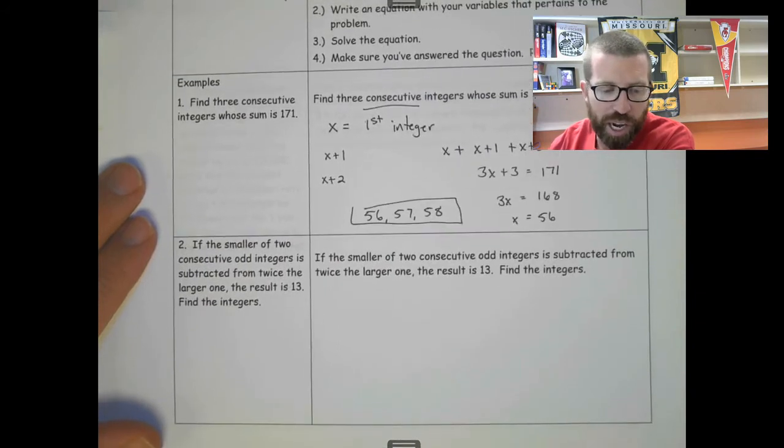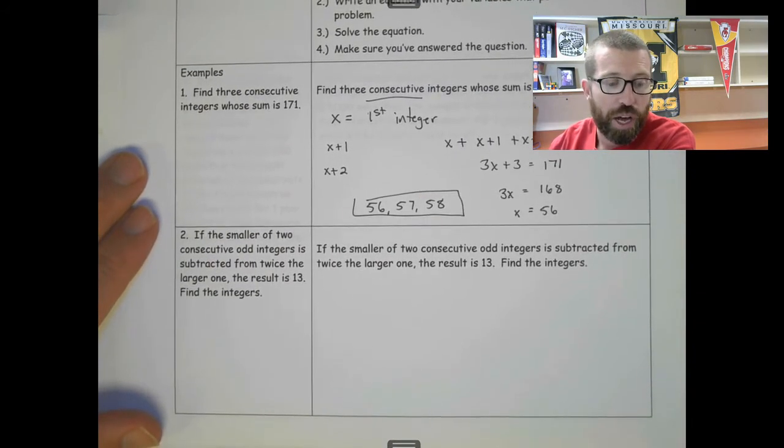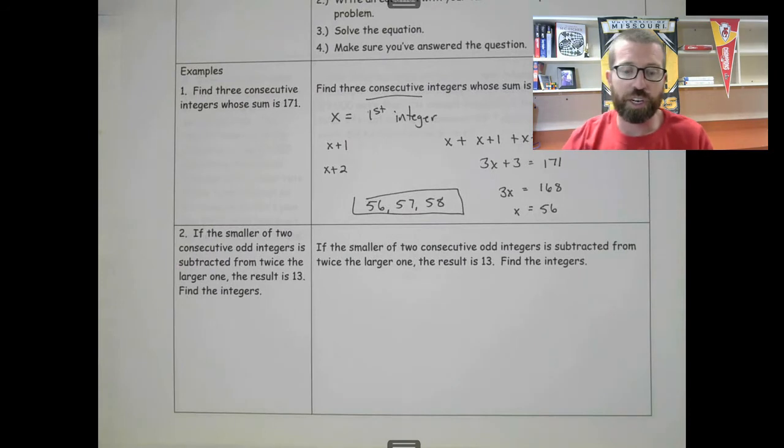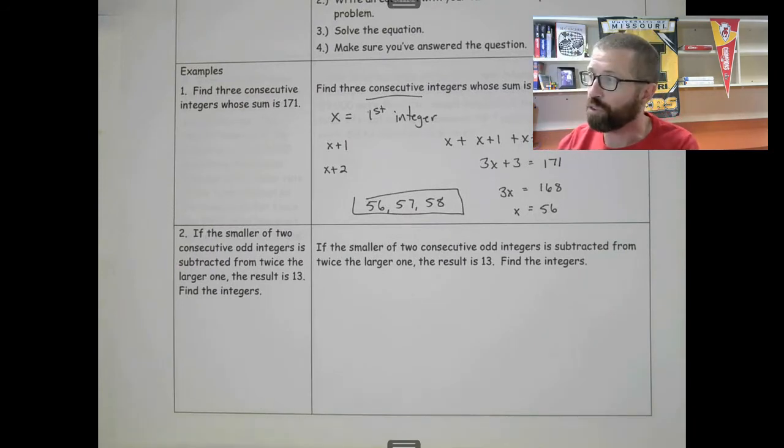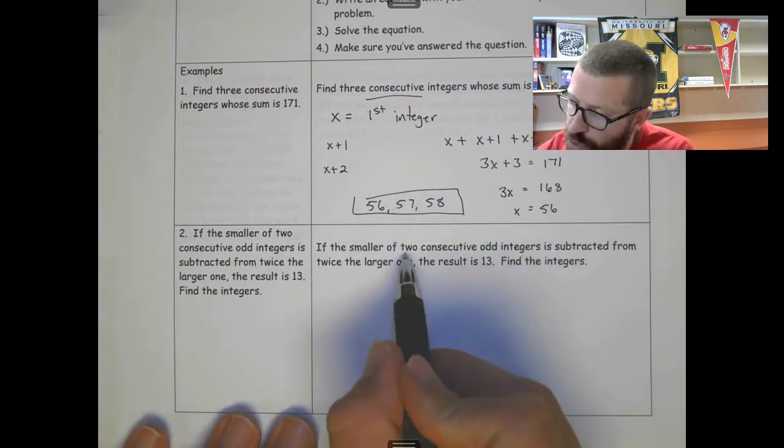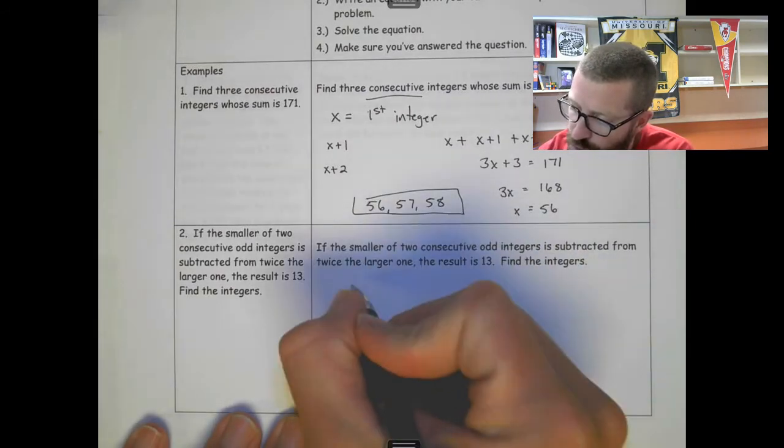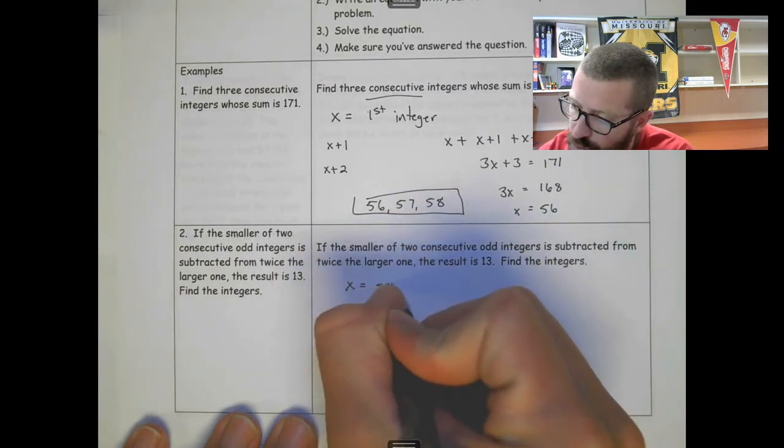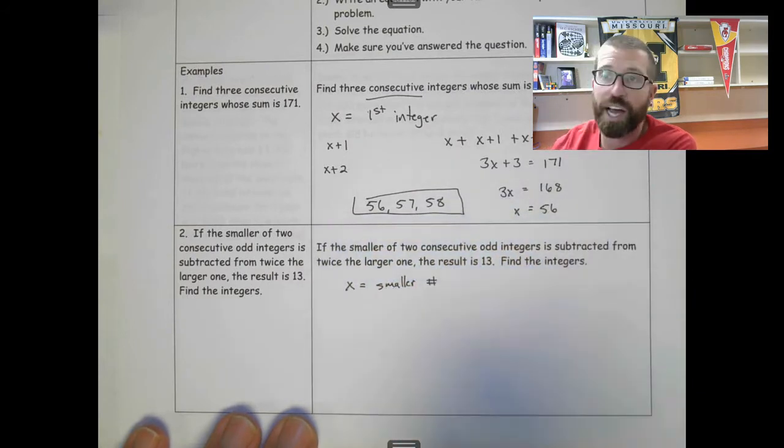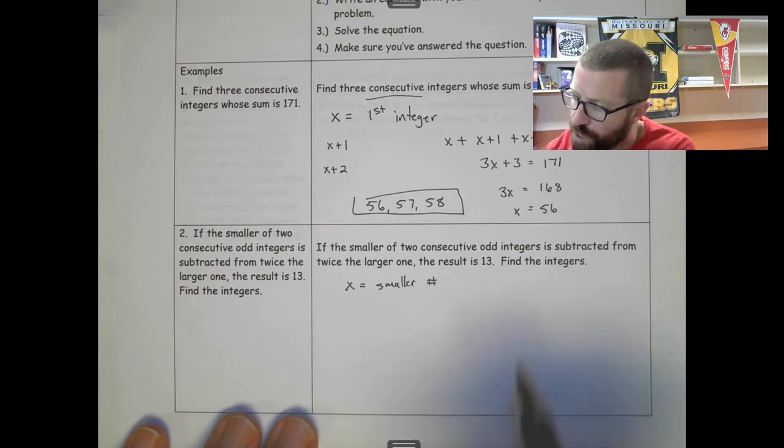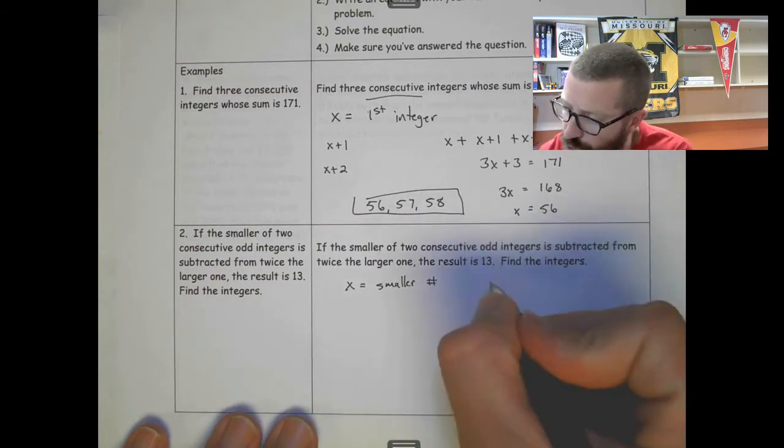The next one says the smaller of two consecutive odd integers is subtracted from twice the larger one, the result is 13. The smaller of two consecutive odd integers, let's make the smaller one x. If it's odd it's going to be two away from it, so x plus two would be the next one.